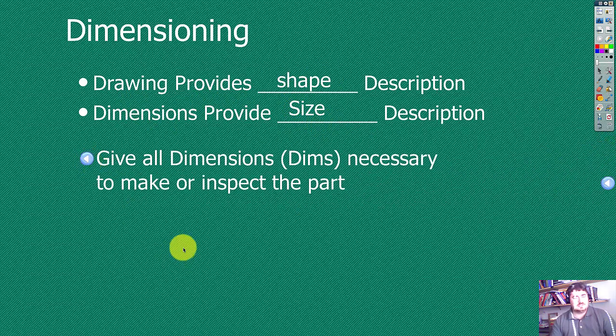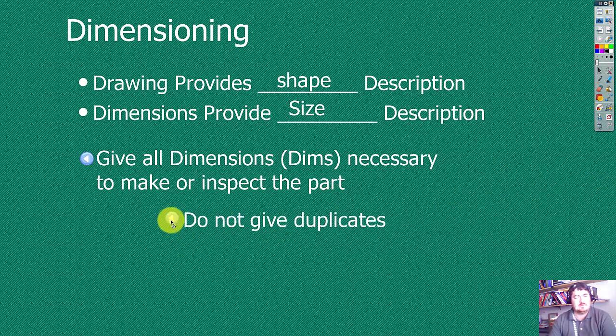When we add dimensions, we want to give all dimensions that are necessary to make or inspect the part, usually both at the same time. But also we don't want to give duplicate dimensions.